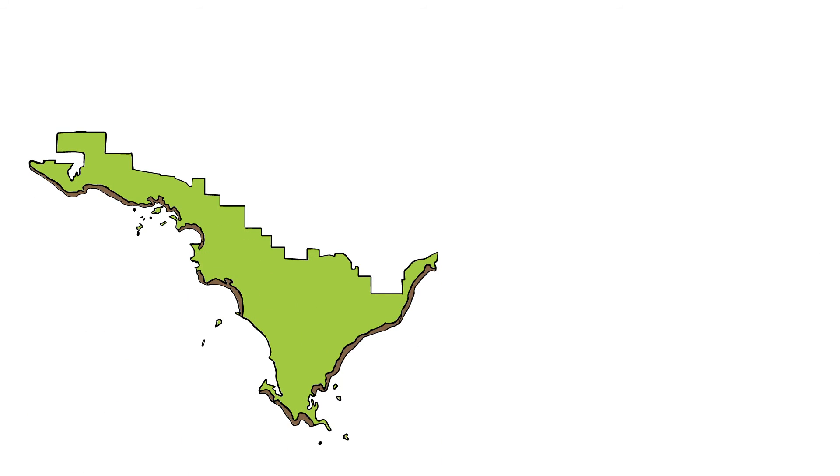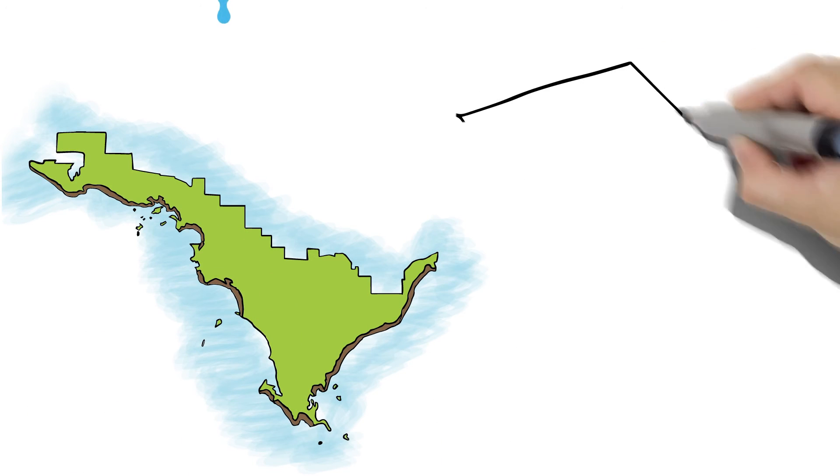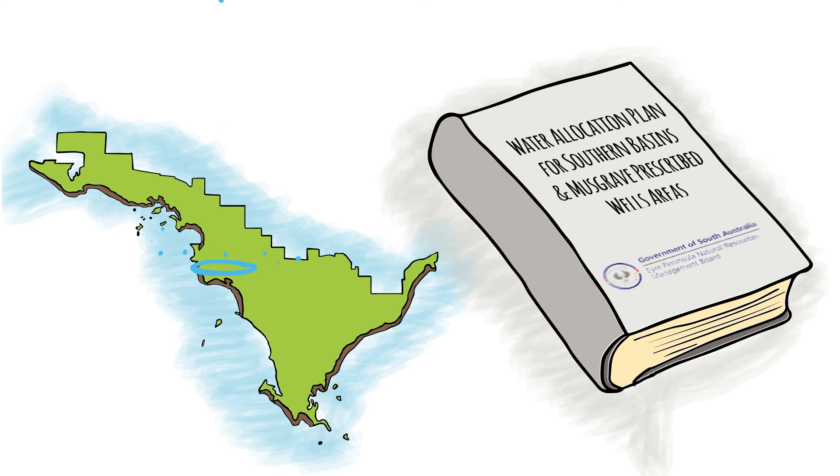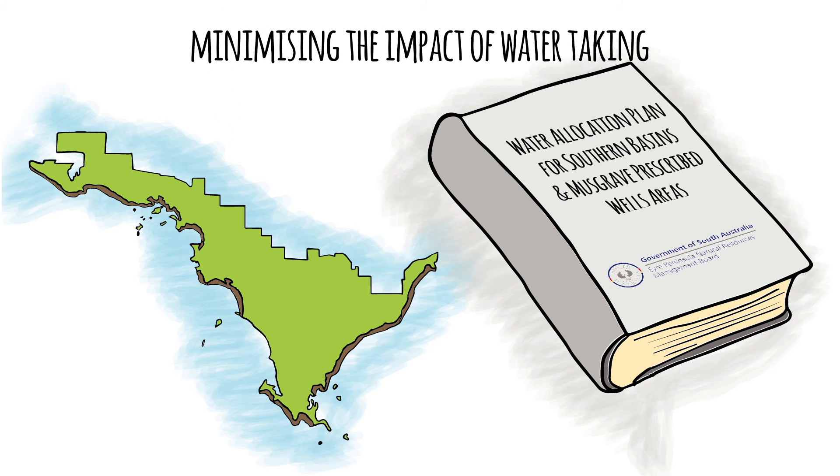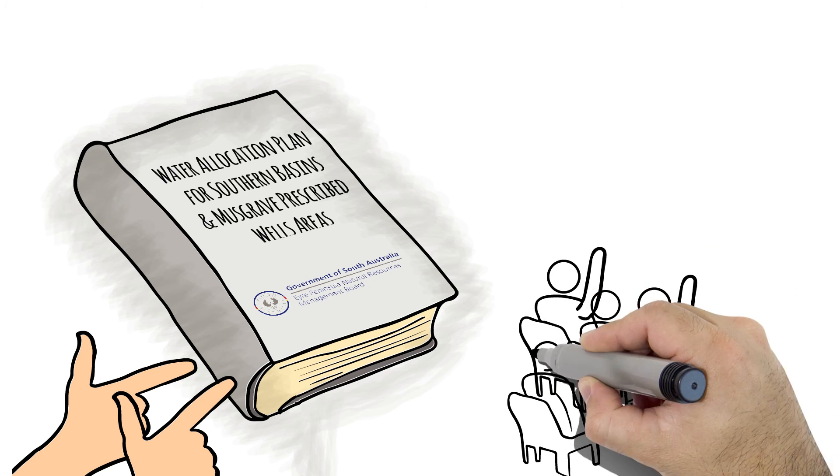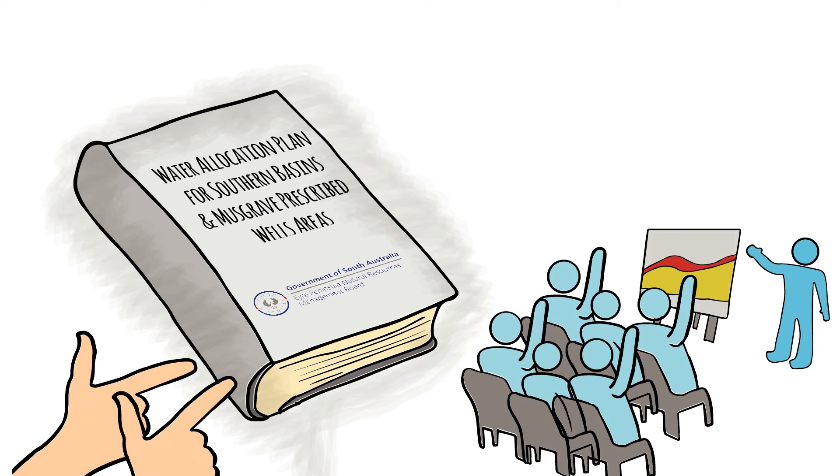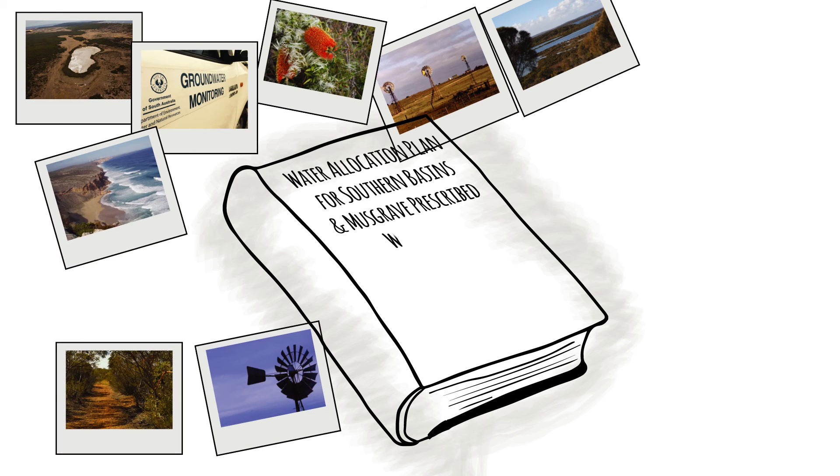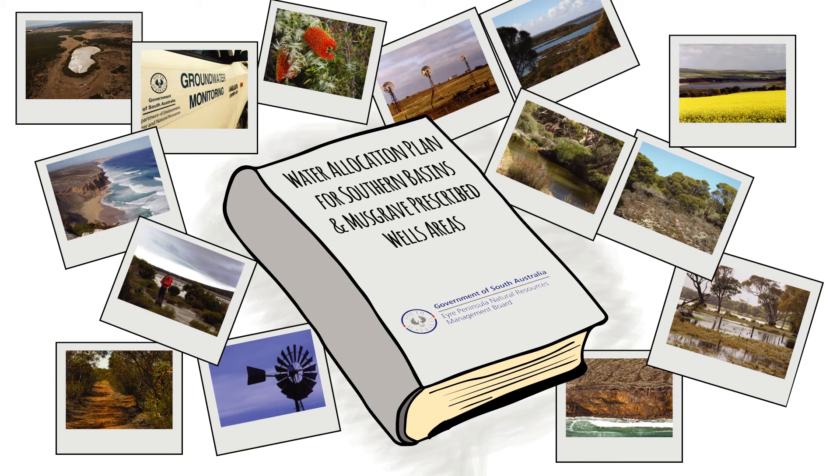The Water Allocation Plan for the Southern Basins and Musgrave is a comprehensive plan that's been developed to ensure the long-term viability of Eyre Peninsula's groundwater while minimizing the impact of water taking on other water resources, GDEs and existing groundwater users. A significant amount of research has contributed to the development of the WAP and its policies. We have also listened to the community and incorporated much of their feedback into the plan. This Water Allocation Plan will allow our unique groundwater resources that allowed our region to be developed to continue to support our community and way of life while supporting the important ecosystems that depend on them.